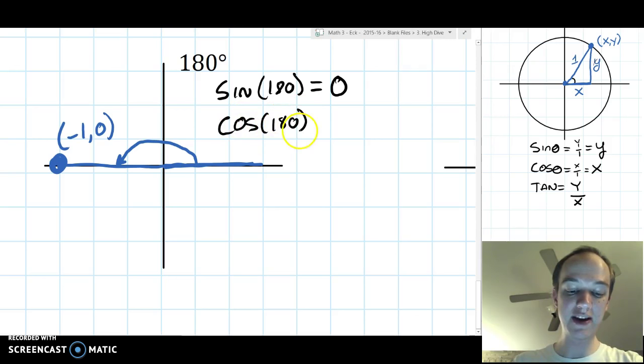Cosine of 180 is one unit away from the origin, but it's in the negative direction. This is going to be negative 1, just like the coordinate.